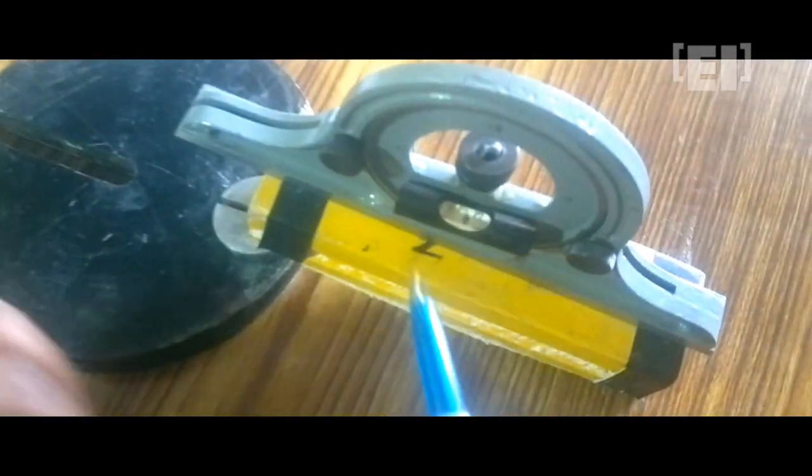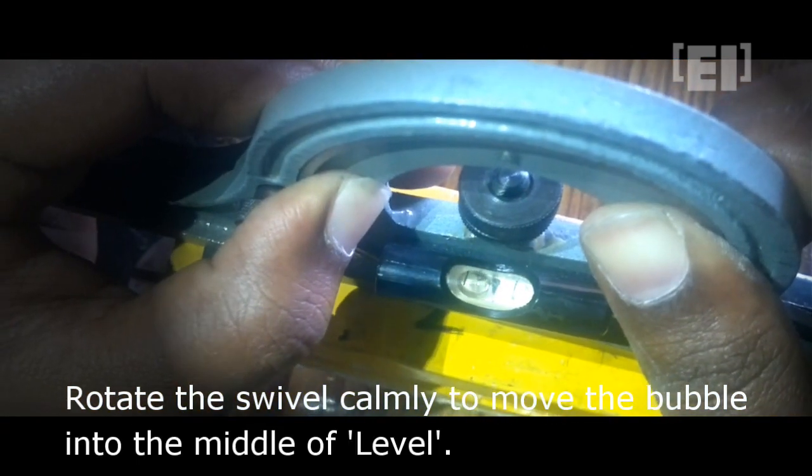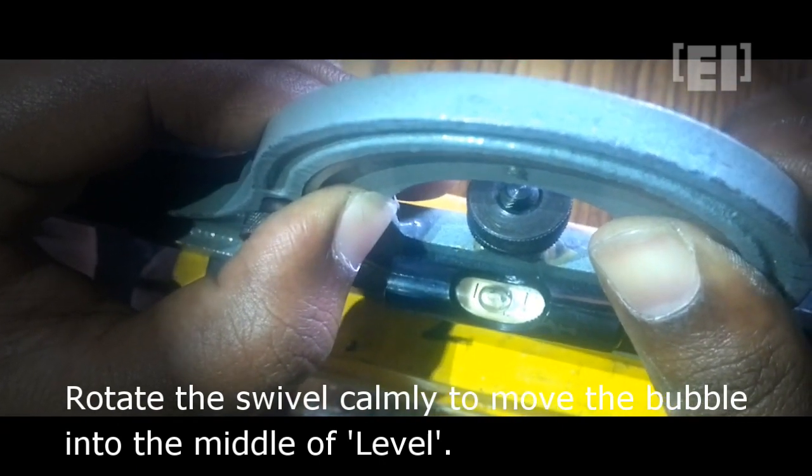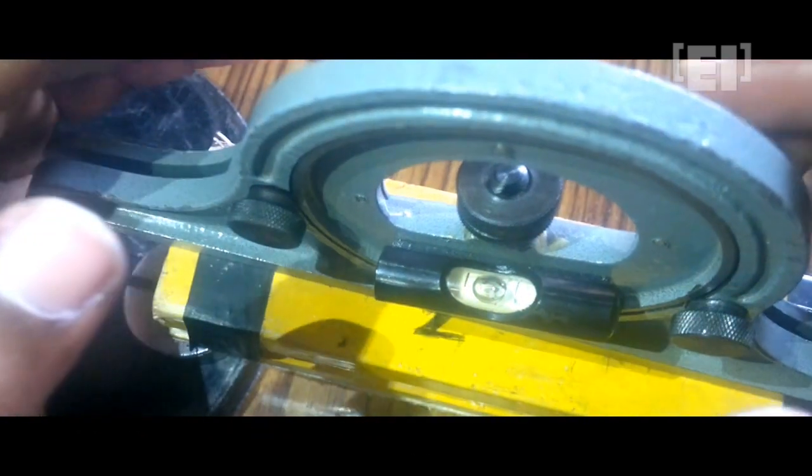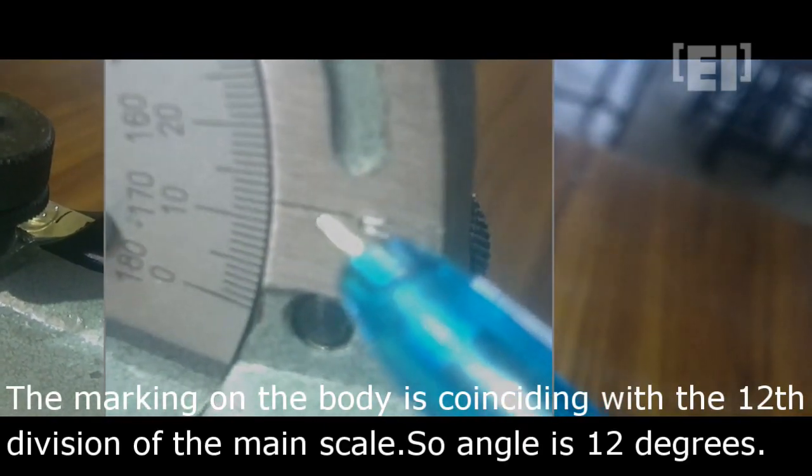As we can see, the bubble is on the extreme left of the level. We will move it to the middle again. Do this very calmly to get higher accuracy. This time, the marking is coinciding with the 12th division. This is the angle.